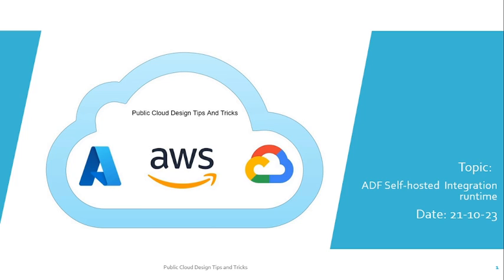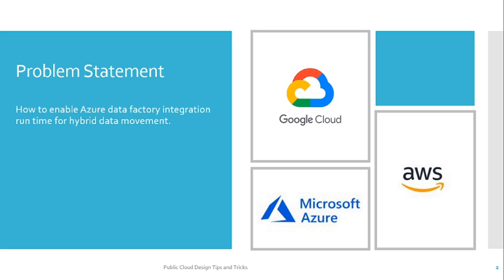Today we are going to discuss about Azure Data Factory self-hosted integration runtime. Now let's try to understand the problem statement. The problem statement is: how to enable Azure Data Factory integration runtime for hybrid data movement? When I say hybrid data movement, that means there are various organizations who want to move or copy their data from their on-premise system towards Microsoft Azure, or from Microsoft Azure towards their on-premise system. What are the best solutions proposed by Microsoft Azure?